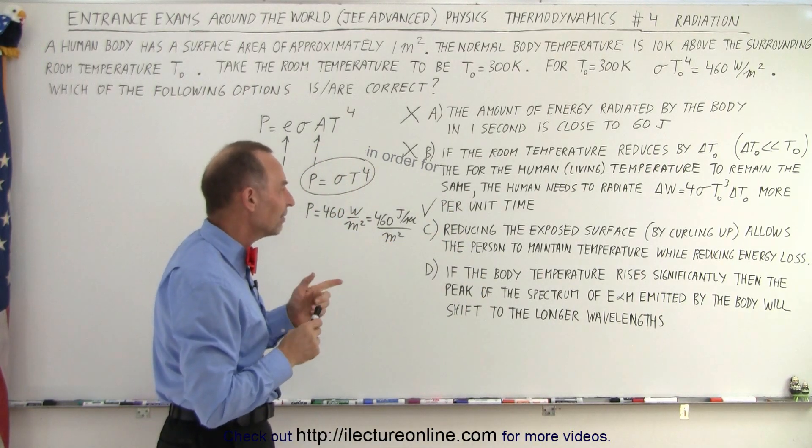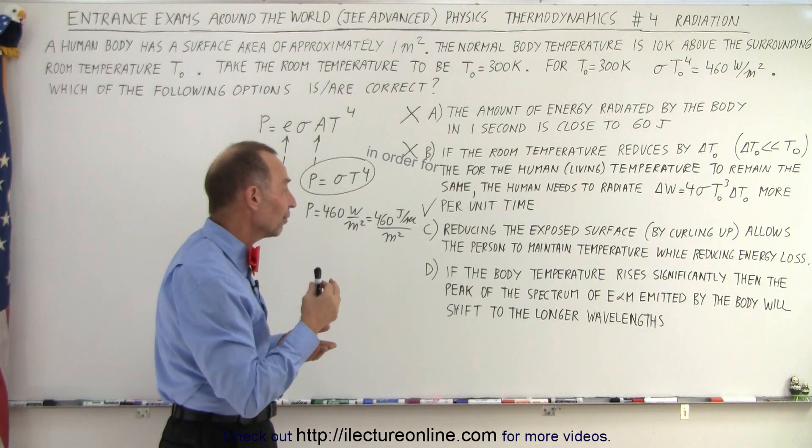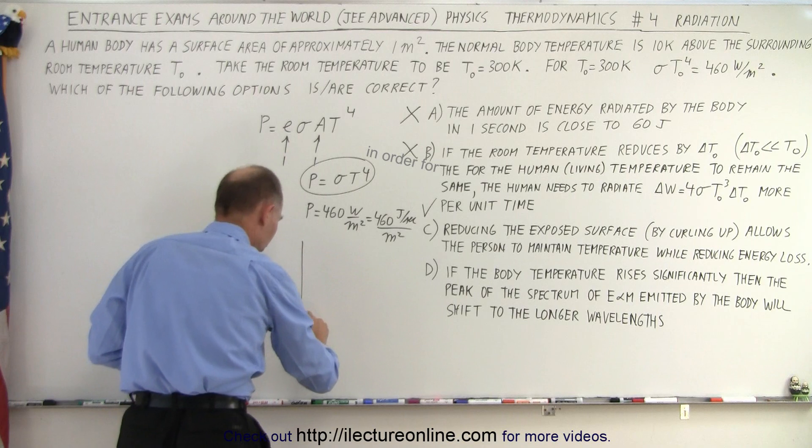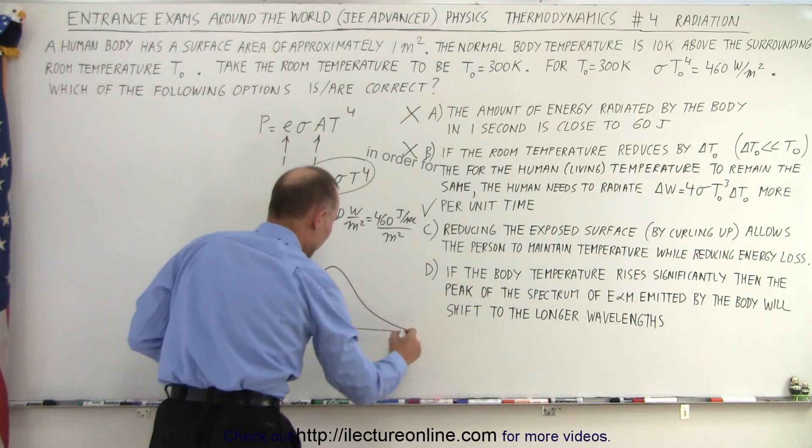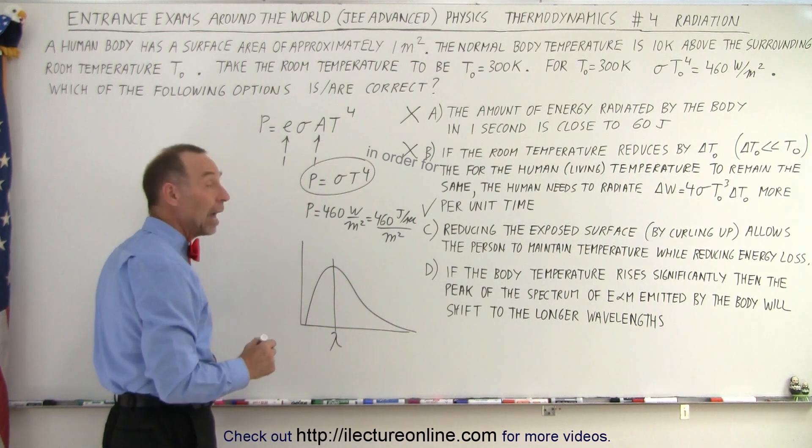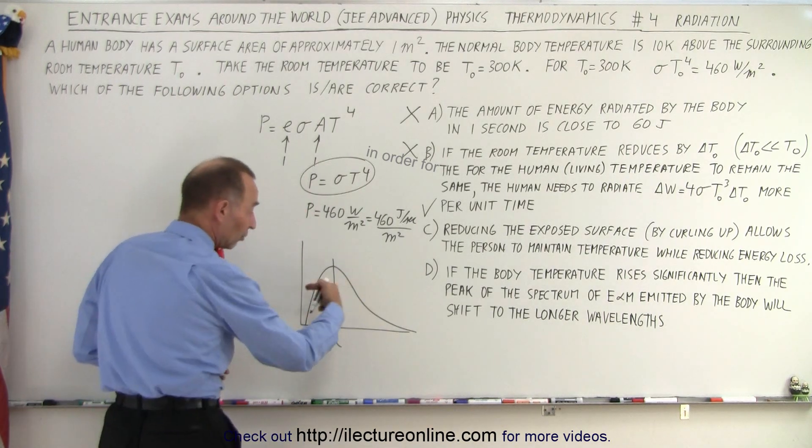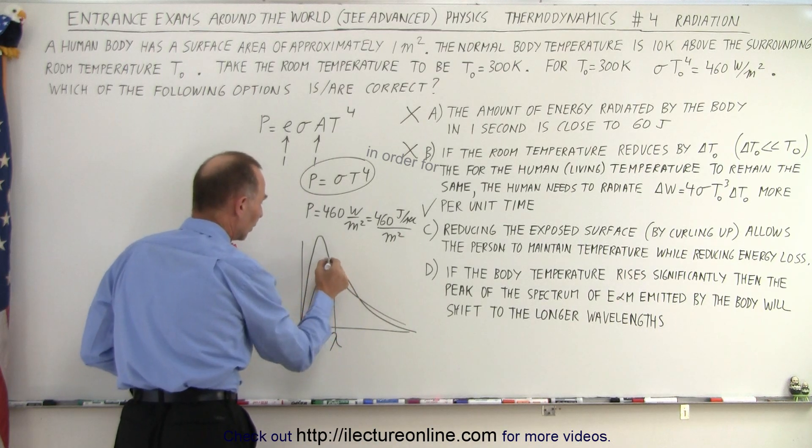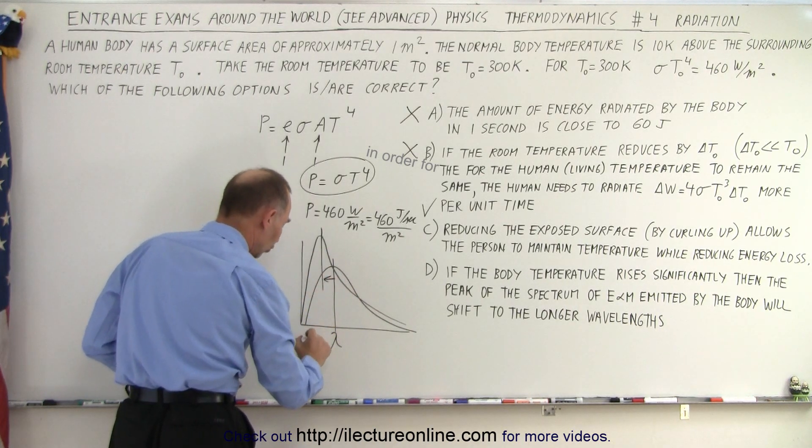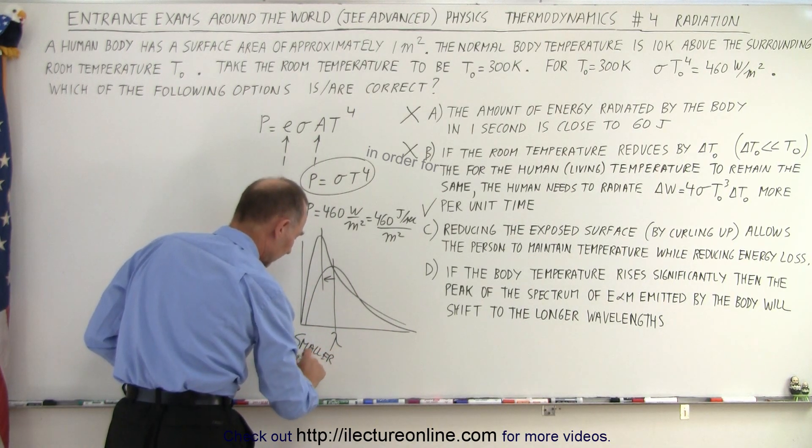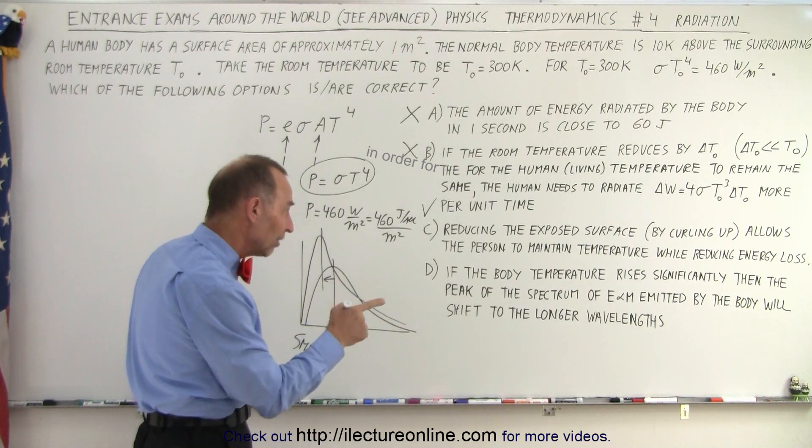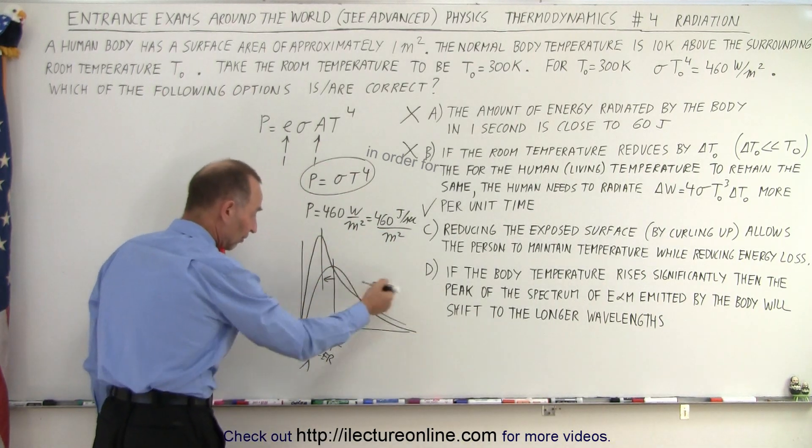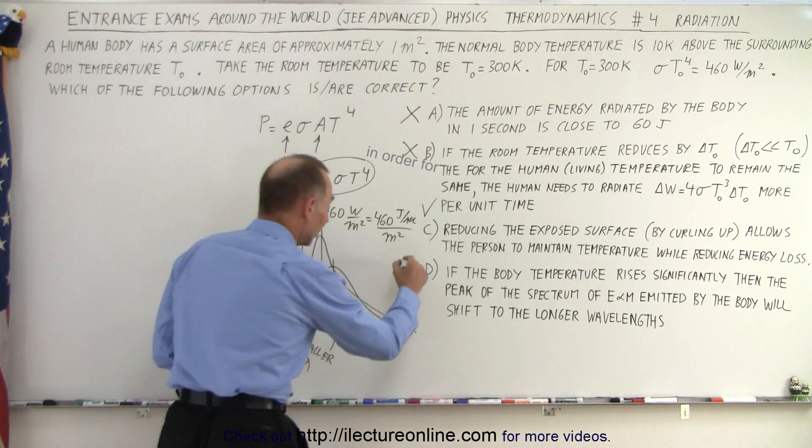And finally, D. If the body temperature rises significantly, then the peak of the spectrum, the ENM emitted by the body, will shift to the longer wavelengths. That sounds like black body radiation. So, let's do that. Let's draw a curve. Here's a typical curve of the black body radiation. And so, this would be the peak wavelength. Now, if the body temperature gets warmer, it causes the peak to shift to the left and higher. So, this is what would happen if you had a warmer temperature. And so, there would be a shift to the left that would be smaller lambda. And is that what they're saying? If the body temperature rises significantly, then the peak of the spectrum of ENM emitted by the body will shift to the longer wavelengths. Longer wavelengths is to the right. The shift is to the left. So, it's the shorter wavelengths. So, that's also an incorrect statement.